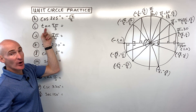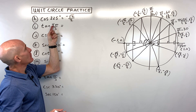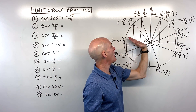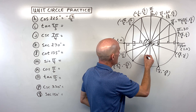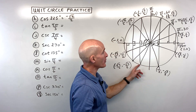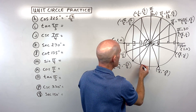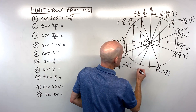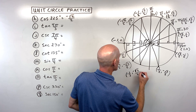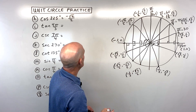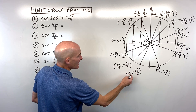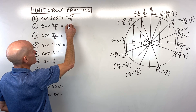Letter I: tangent of 4π/3. Think of this as 1 and 1/3 π — go 1π plus another 1/3 of π, landing in the third quadrant. The reference angle is π/3 (60 degrees). Coordinates are negative 1/2, negative √3/2 — both negative in the third quadrant. Tangent is y over x; the 2s cancel and the negatives cancel, giving positive √3.